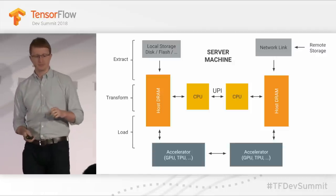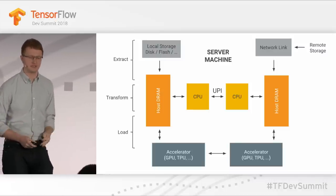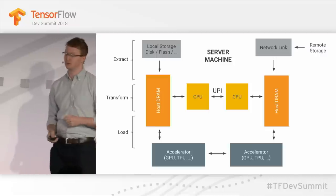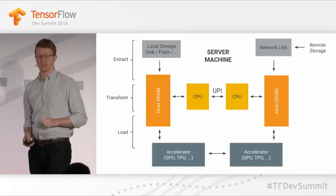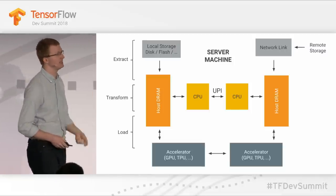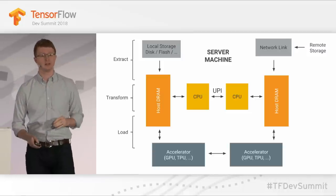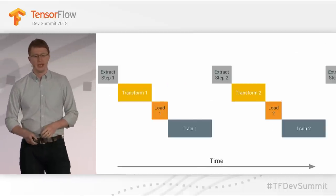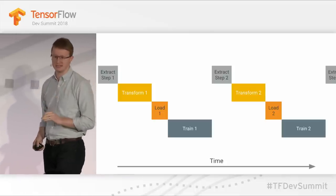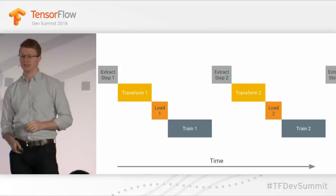Each of the different phases of ETL uses different hardware components in your server system. Your extract phase exercises your disk and storage system, or your network link if loading from remote storage. Transform typically happens on the CPU and is very CPU-hungry. Your load phase exercises the DMA connections to your accelerator. This is true whether you're using a GPU, a TPU, or any other accelerator.